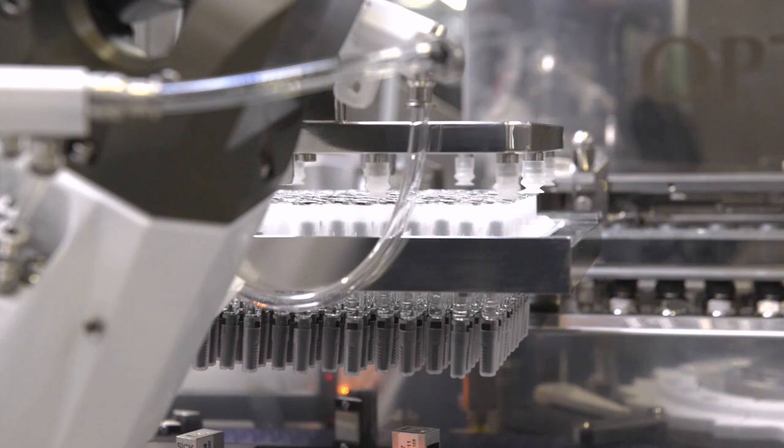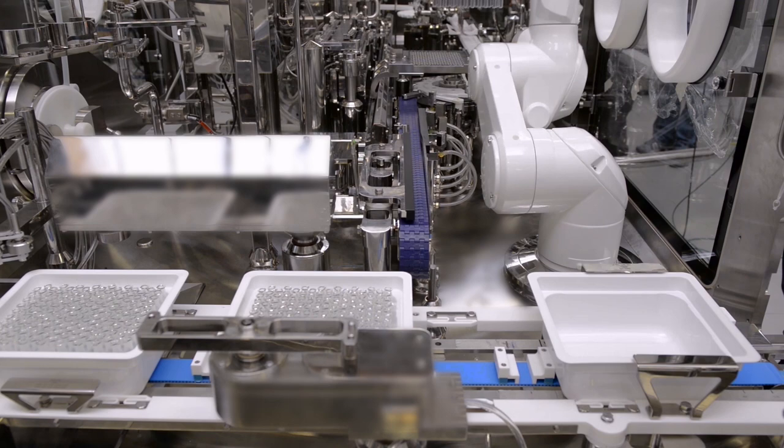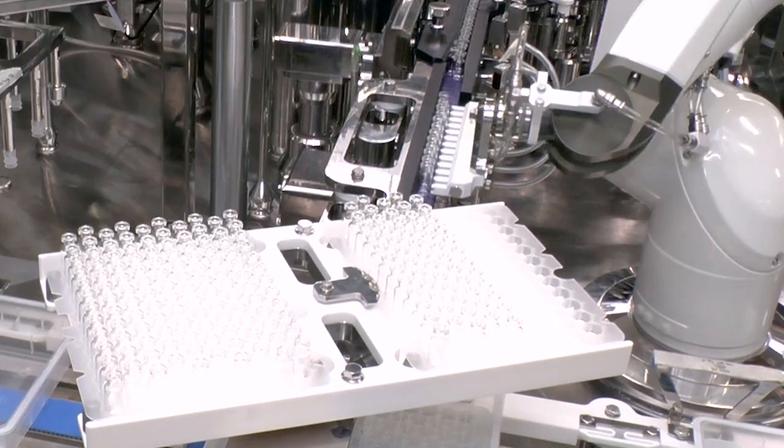After the ready-to-use syringes are filled and stoppered, the bidirectional conveyor reverses direction to take the filled and stoppered syringes out of the isolator, where an automated printer prints batch data on the side of the tub.